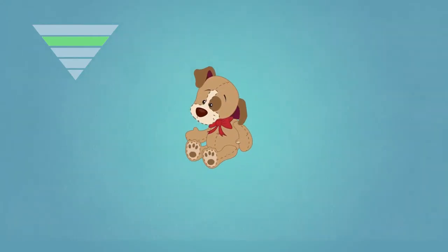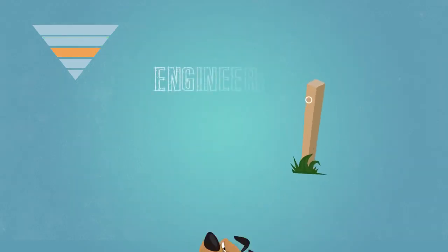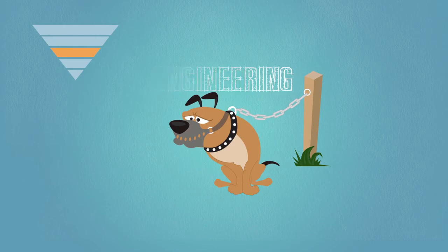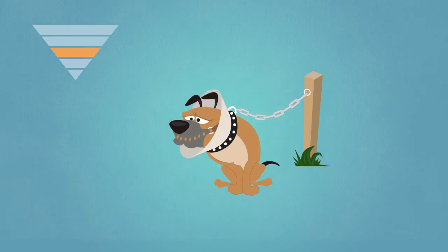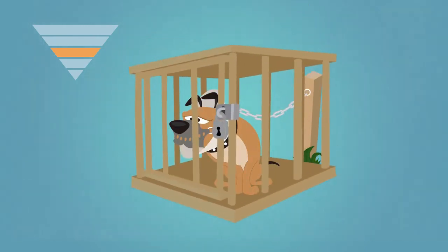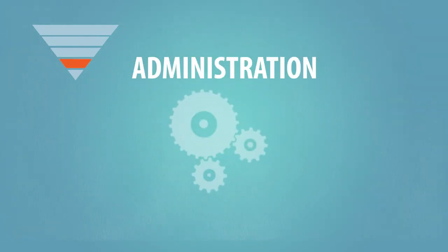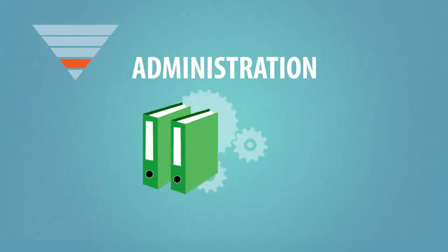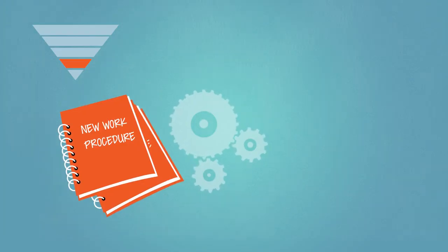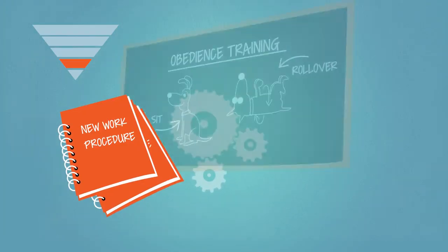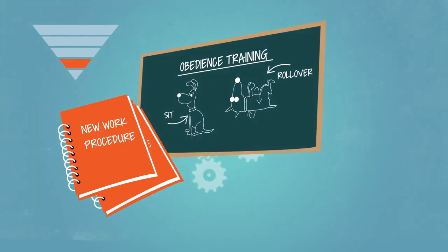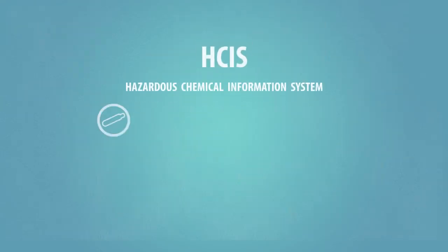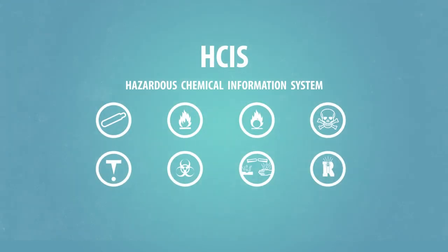The third most effective means of controlling hazards is engineered controls. These do not eliminate hazards but rather isolate people from hazards. Administrative controls are changes to the way people work. Examples include procedure changes, employment training, and installation of signs and warning labels, such as those in the hazardous chemical information system.